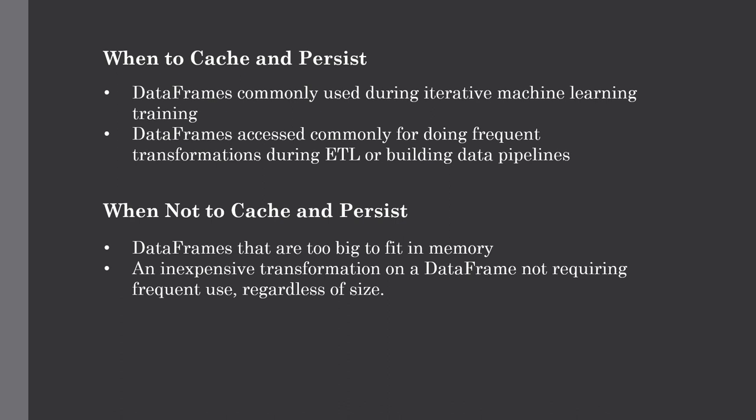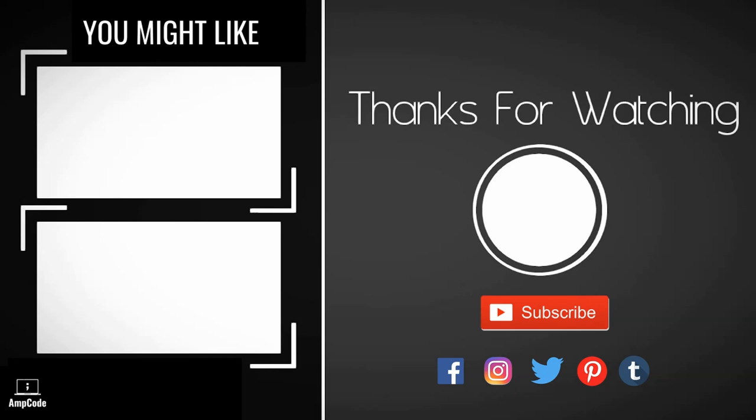That was all about how to use cache and persist in your Spark application. This is a very important topic, but theoretical knowledge alone is not enough — you have to actually use these functions in your Spark application and see the impact, because there is no hard and fast rule. You need to iteratively improve your caching and persisting strategies. If you have any doubts, let me know in the comments. Please subscribe to the channel and ring the notification bell for the latest updates.